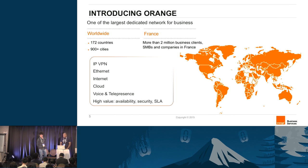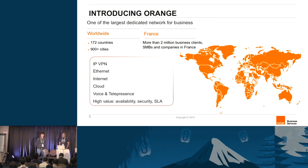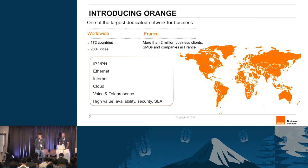Thank you. I will introduce Orange. It's a large telco company, a French one, and it's a worldwide company providing services to business clients — more than 2 million business clients. We provide IPVPN services, Ethernet services, cloud services, and voice services. Our main concern is about high availability, security, and SLAs.